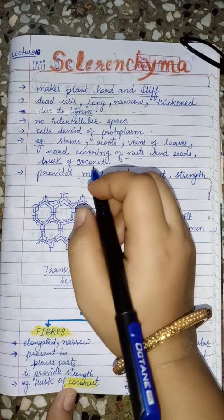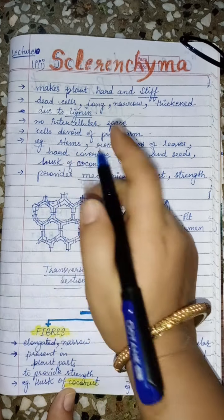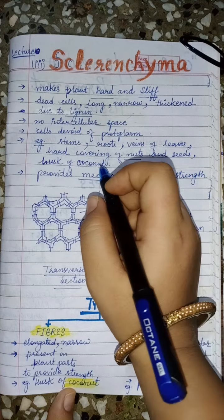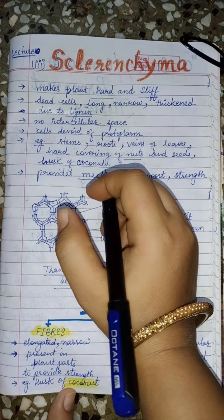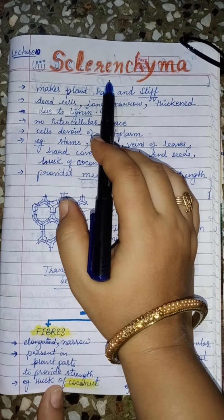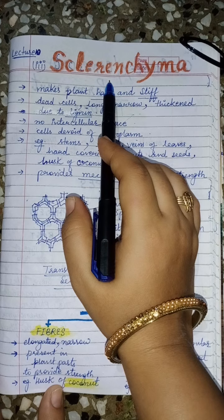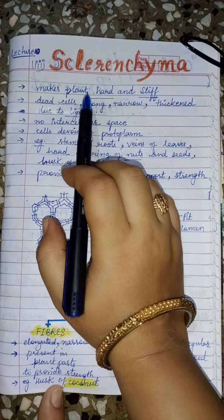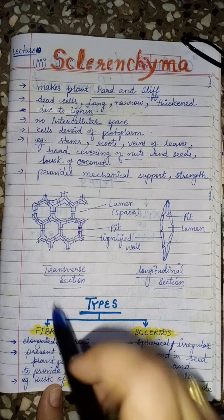Good morning students. In the previous lecture we learned about colenchyma, a permanent simple tissue. In this lecture we will proceed to the next permanent simple tissue, that is sclerenchyma. Let's proceed with the characteristics of sclerenchyma tissue.